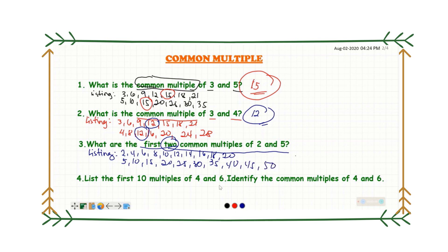Looking at these multiples, we need to find the first two common multiples. Both two and five have ten in their lists, and another common one is twenty — two has twenty and five has twenty. So the first two common multiples of two and five are ten and twenty.